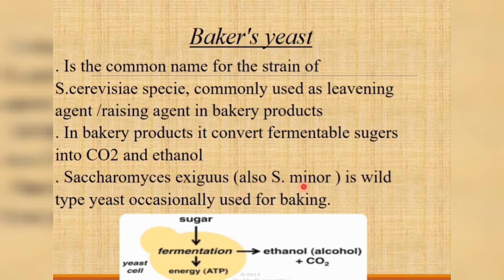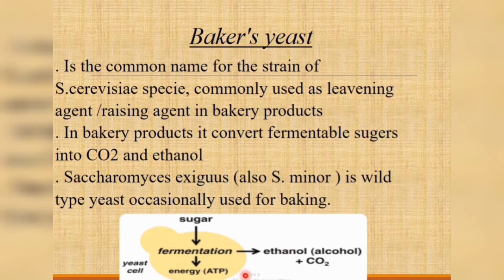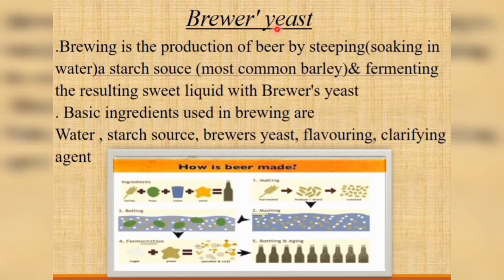S. minor is a wild type of yeast occasionally used for baking. This is the process of how sugar is fermented and converted into other by-products, and this process is followed by the yeast cells.